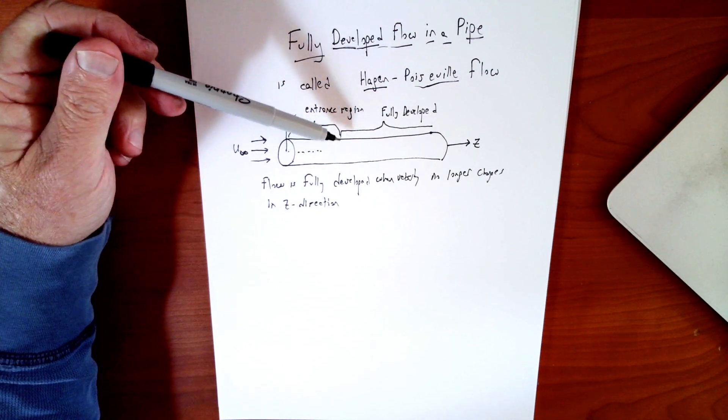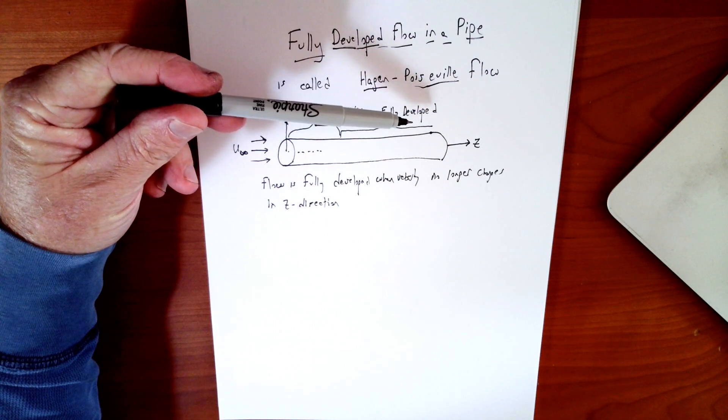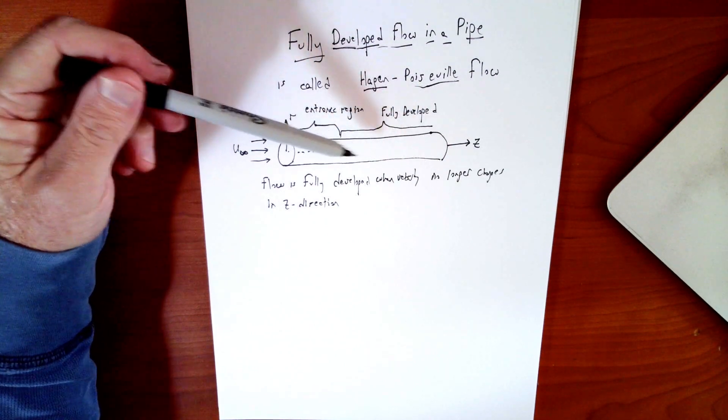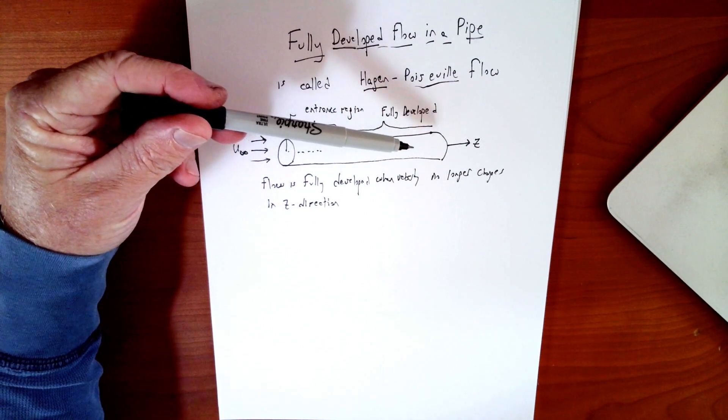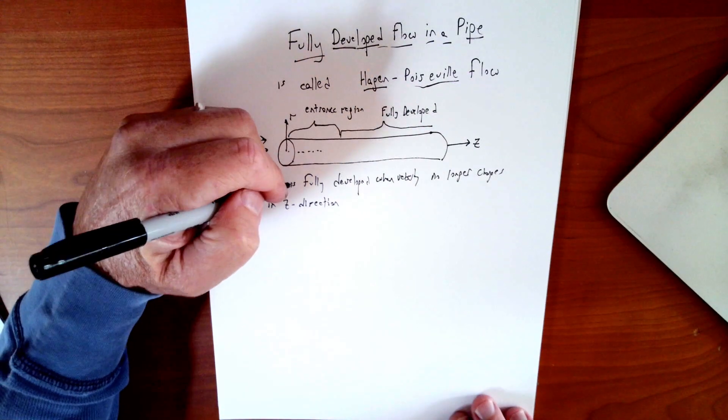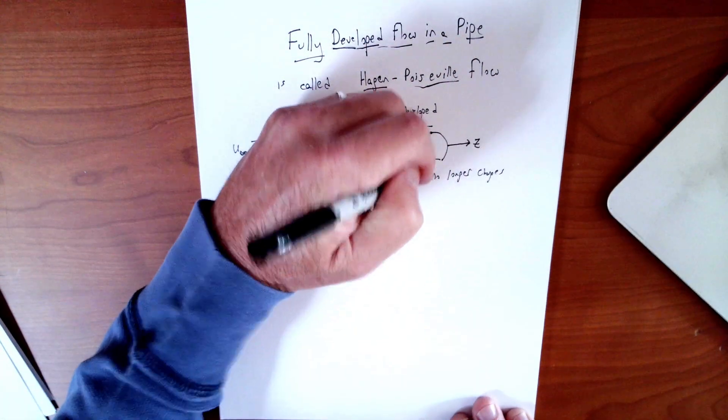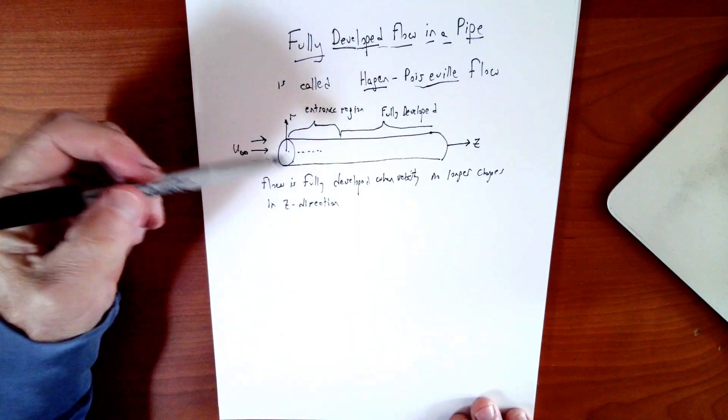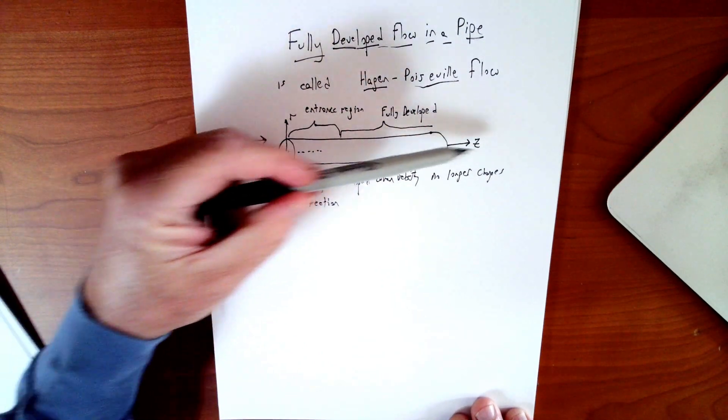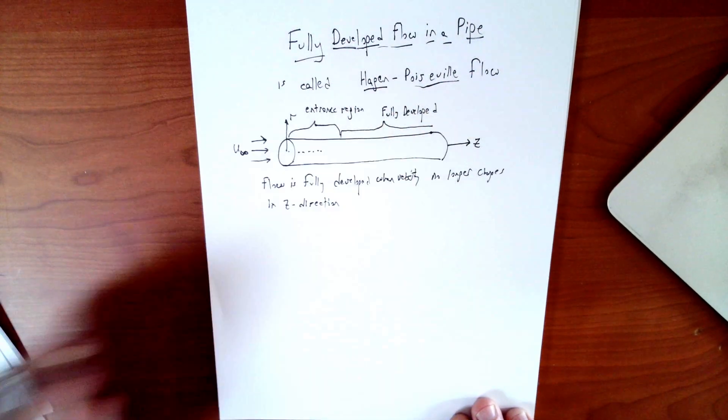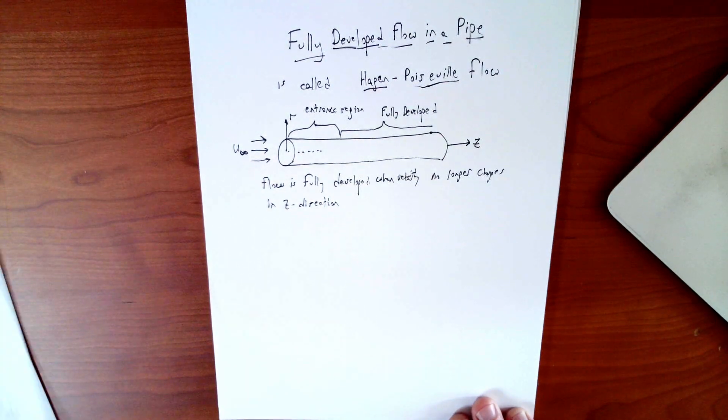And then eventually it will become fully developed as flow does between two plates. But just the same way in a pipe, it will eventually become fully developed. And it is defined as fully developed just as it was before, that the velocity will no longer change in the direction of flow.